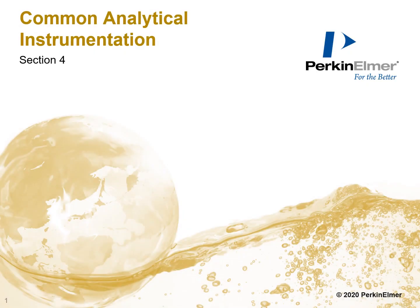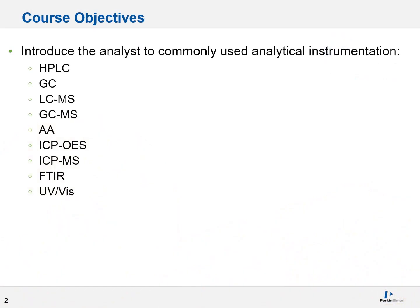Now let's talk about common analytical instrumentation that you may encounter in your lab. There are a lot of instruments that could potentially be used depending upon what your analysis is. Some common ones include HPLC, GCs, LC-MS, GC-MS, AA, ICP-OES, ICP-MS, FTIR, and UV-VIS. I know that's a lot of letters, but stay with me.